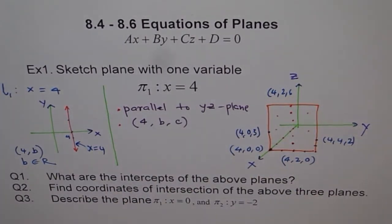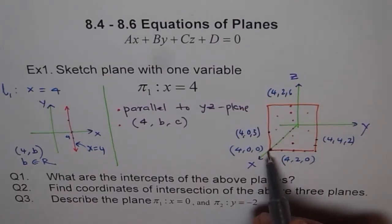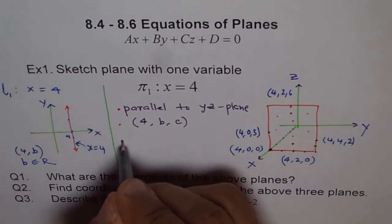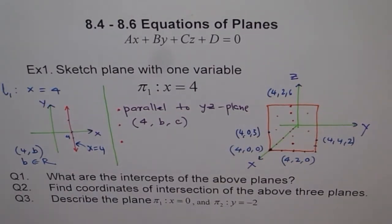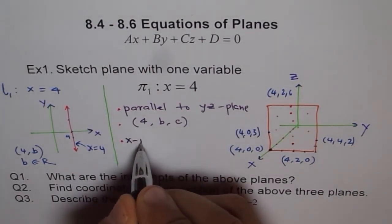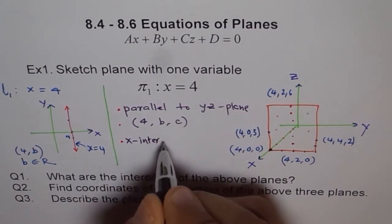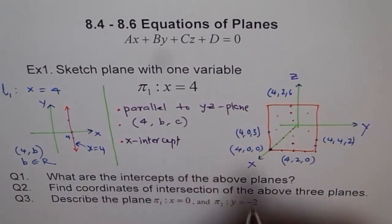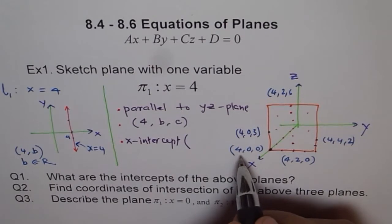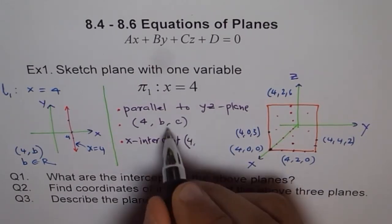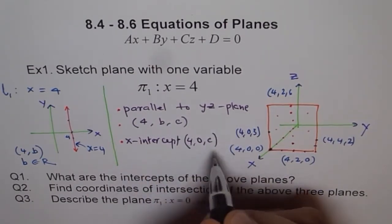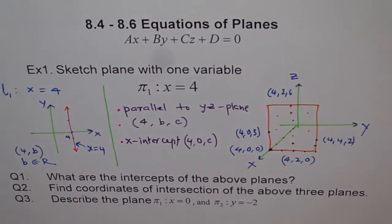That is very flexible. And a very special point is at the x-intercept. So x-intercept of our plane is always four, zero, zero. When b and c are zero. When b and c are zero, we get our x-intercept, which is four, zero, zero. So that is how our plane is going to look like.